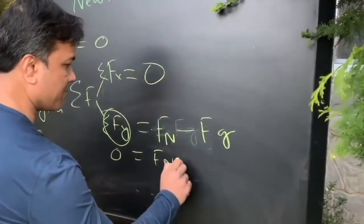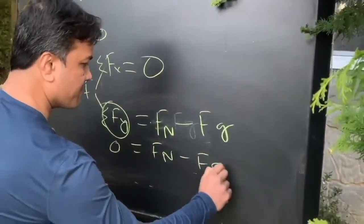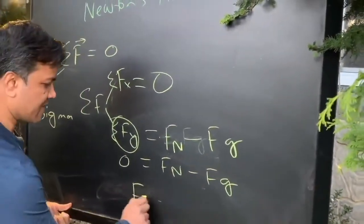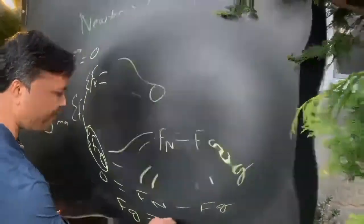It is equal to Fn minus Fg. So, mg is equal to Fn.